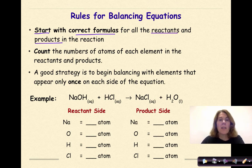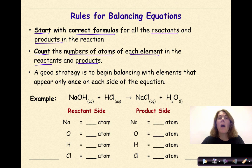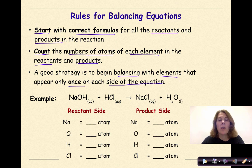The second step is to count the number of atoms of each element in the reactants and products. A good strategy is to begin balancing with elements that appear only once on each side of the equation.